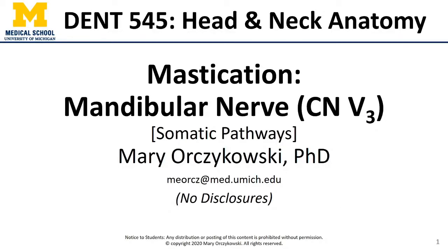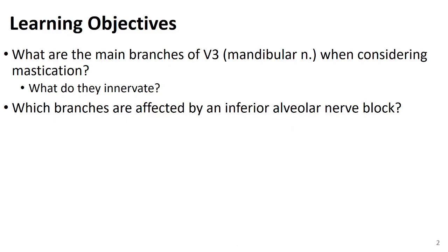Hi all, this is Dr. O, and in this video we're going to talk about the mandibular nerve, or V3. We're going to start here with somatic pathways and follow up with some autonomic pathways that run through V3 in the next video. Specifically, we're going to answer what are the main branches of V3 when considering mastication, and what do they innervate, and which branches are affected by an inferior alveolar nerve block.